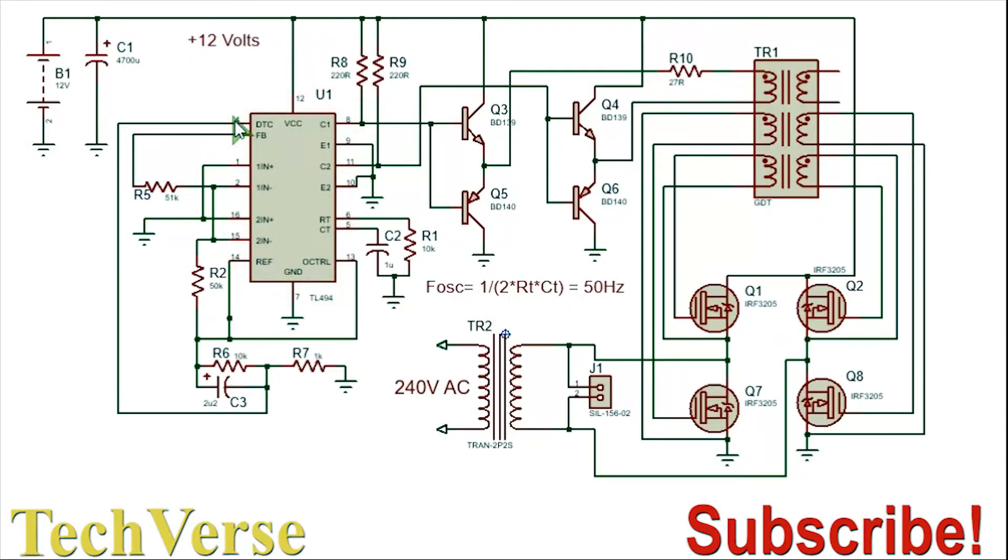Welcome to my channel TechVerse. I'll be showing you how to make a full bridge inverter circuit with the wattage of 1000 plus watts. At the input you have your battery, it can be 12 volt, so you can use 2 in series or 4 in series. Then you have the input capacitor system.